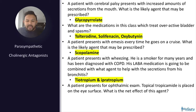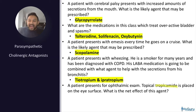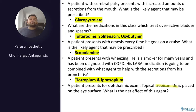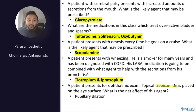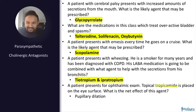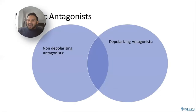A patient presents for an ophthalmological exam and topical tropicamide is placed on the eye surface. With an anticholinergic medicine on the eye, it's going to dilate — tropicamide causes mydriasis. Think of it as when you see Tropicana orange juice, your eyes widen up. Tropicamide is an anticholinergic agent.